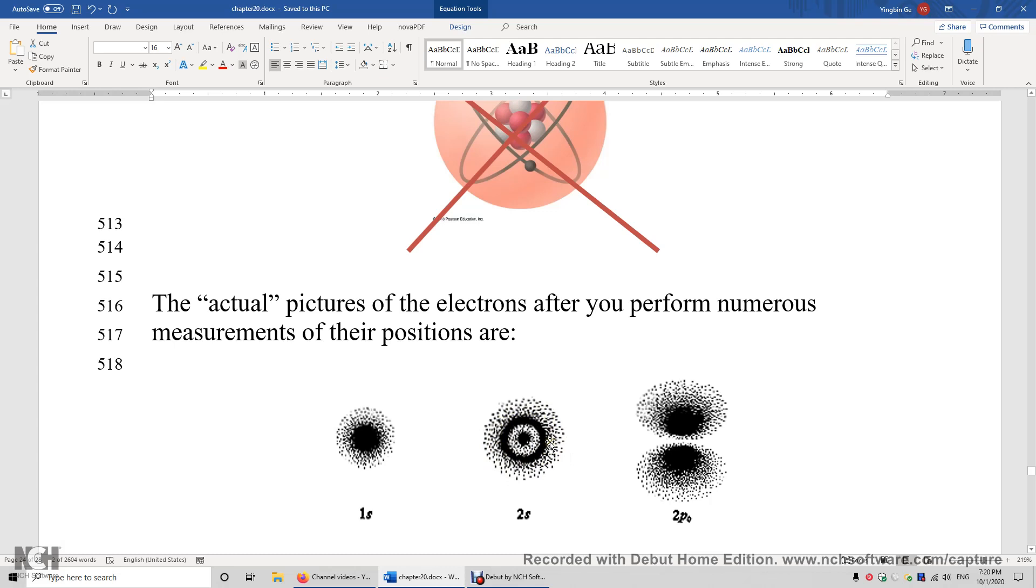So the 2s electron may appear anywhere except on one spherical nodal surface. So when R is equal to 2 atomic unit of length, there is a nodal surface. The electron may never appear at that position when R is equal to 2 atomic units.